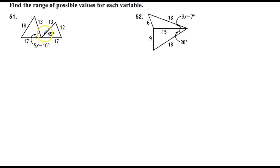51. Here's another one we did quite a few of in class. Remember that we're going to use the converse of the hinge theorem here. Since I've got 13 congruent to 13, 17 congruent to 17, I can look at these middle, the included angle, and say which one's bigger? Well I don't know what 5X minus 10 is. But if we use the converse of the hinge theorem, I can say 18 is larger than 12. So I know that 5X minus 10 must be larger than 45.